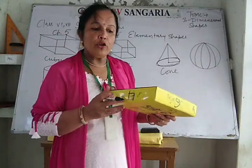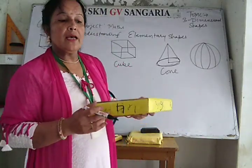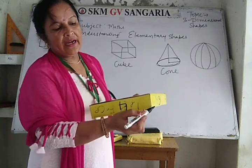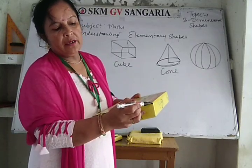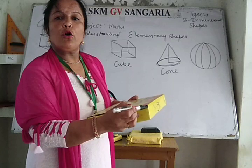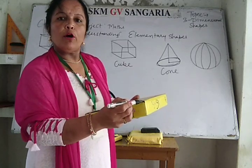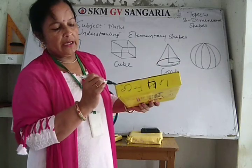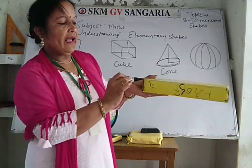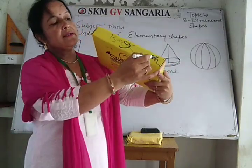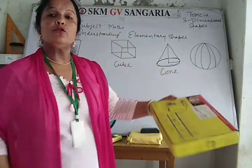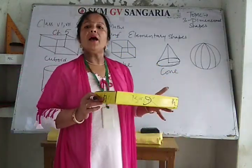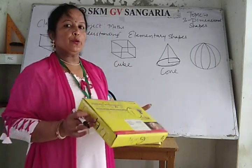When three edges meet at a point, that is called a corner or vertex. Counting: one, two, three, four, five, six, seven, eight — so there are eight corners of a cuboid and a cube.